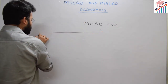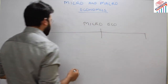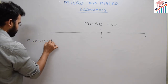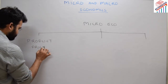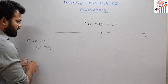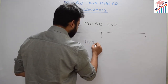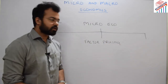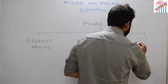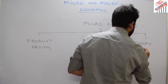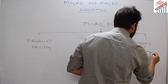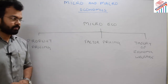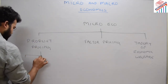Under microeconomics there are three important heads. The first is product pricing, the second is factor pricing, and the third is the theory of economic welfare.